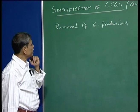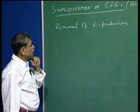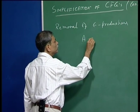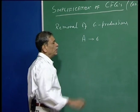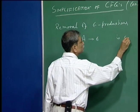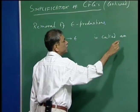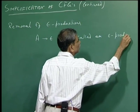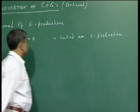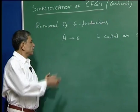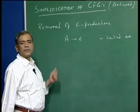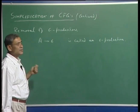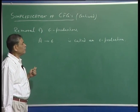First, the definition of epsilon production: any production of the form A goes to epsilon is called an epsilon production. The left-hand side, as usual in a CFG, is a non-terminal, and the right-hand side consists only of the empty string.